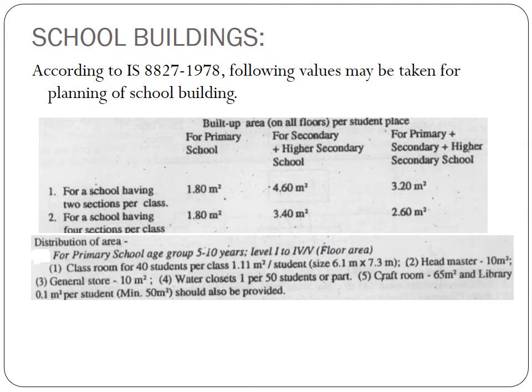Coming to the first type of public building, which is a school building. According to IS 8827-1978, the following values may be taken for planning the school depending upon the number of students per class for primary schools, secondary and higher secondary schools, along with different distribution of areas for classrooms, headmaster's room, general store, water closets, craft room, library, and so on.